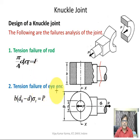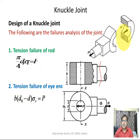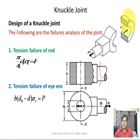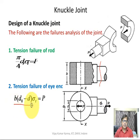The second failure mode is tension failure of the eye end. The area resisting this force is (D0 − D) × B, where D0 is the outer diameter of the eye, D is the knuckle pin diameter, and B is the eye thickness. So B·(D0 − D)·σ_t equals the resisting force, and in the limiting case it equals the applied load.